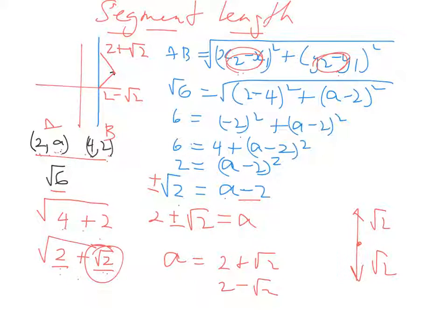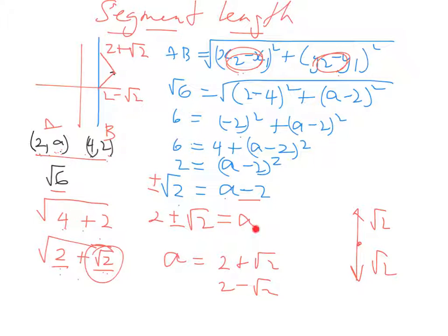That's how we can use a given length to determine a coordinate. Set up your equation, substitute your distance, substitute your coordinates, square both sides, simplify, rearrange, take the square root — and remember, we'll have a plus and minus — then simplify and transpose again so that we're left with just our unknown coordinate. From there, there should be two responses. The only time you won't get two is if the result is 0, because you can't have plus or minus 0.